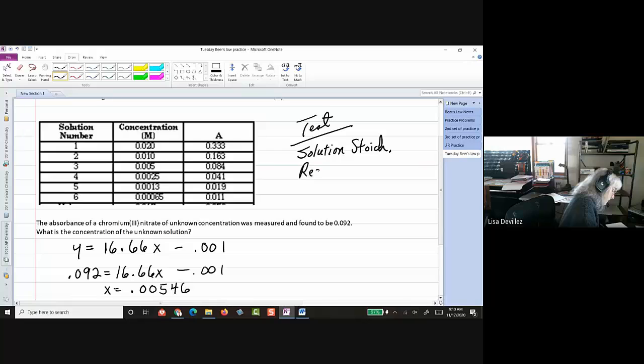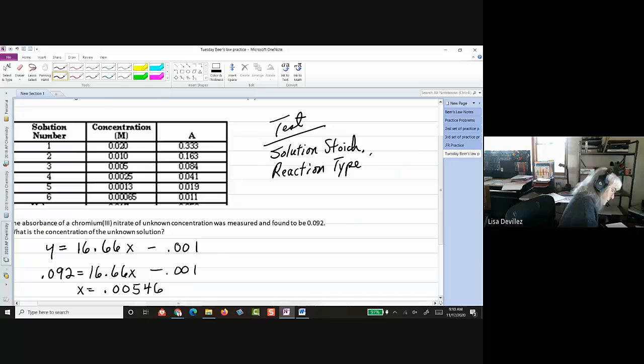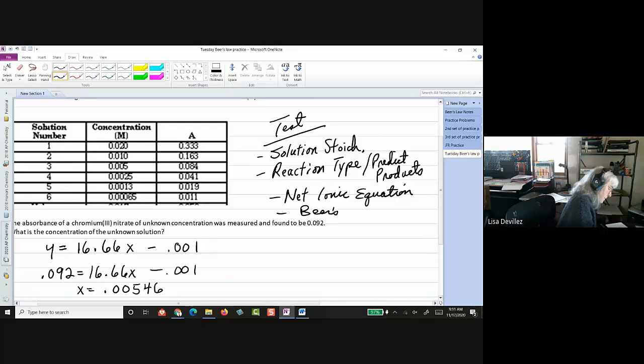Then reaction types... So identifying the reaction type. Then I'll say reaction types and also being able to predict the products if I give you the reactants. Okay. And then being able to write a net ionic equation. And... Oh, and Beer's Law. And Beer's Law will be a problem just like the one we just did.